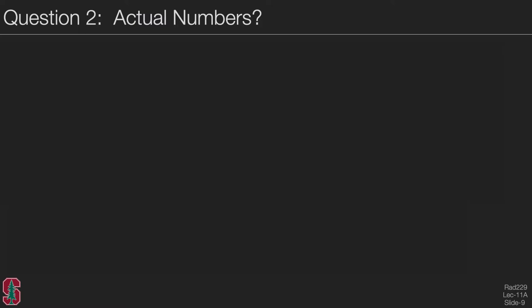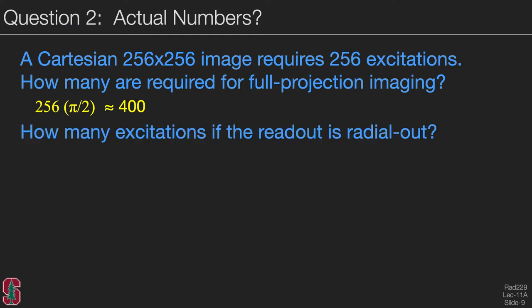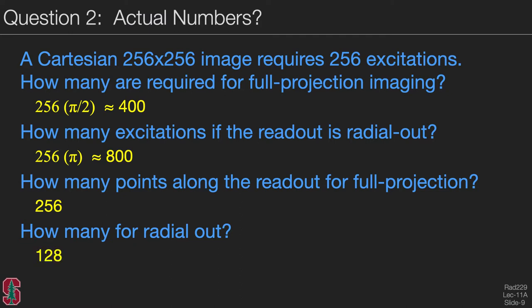For a 256 by 256 Cartesian image requiring 256 excitations, full projection imaging requires 256 times pi over 2, approximately 400 excitations. Radial out requires about double that, roughly 800 excitations. The number of readout points is 256 for full projection, the same as Cartesian, and 128 points for radial out. This may vary slightly if sampling occurs during the gradient ramp-up period.